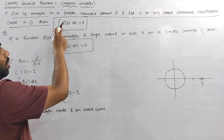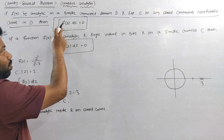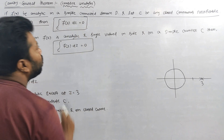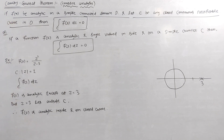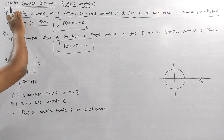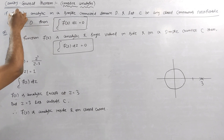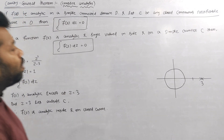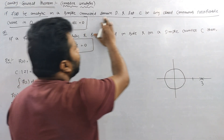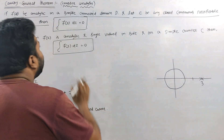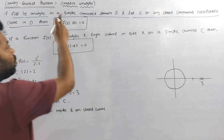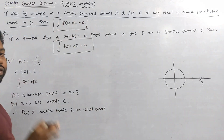Then integration over the curve of f(z) dz is equal to 0. If f(z) is analytic and single-valued, then f(z) is analytic in a simply connected domain D. If f(z) is analytic in a simply connected domain D and C is a closed curve, then the integration over the curve is 0.